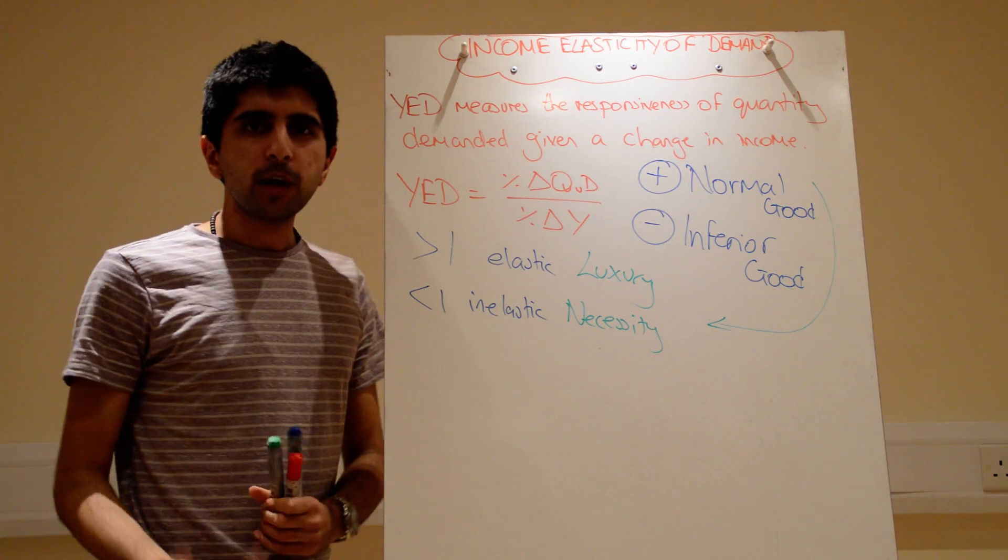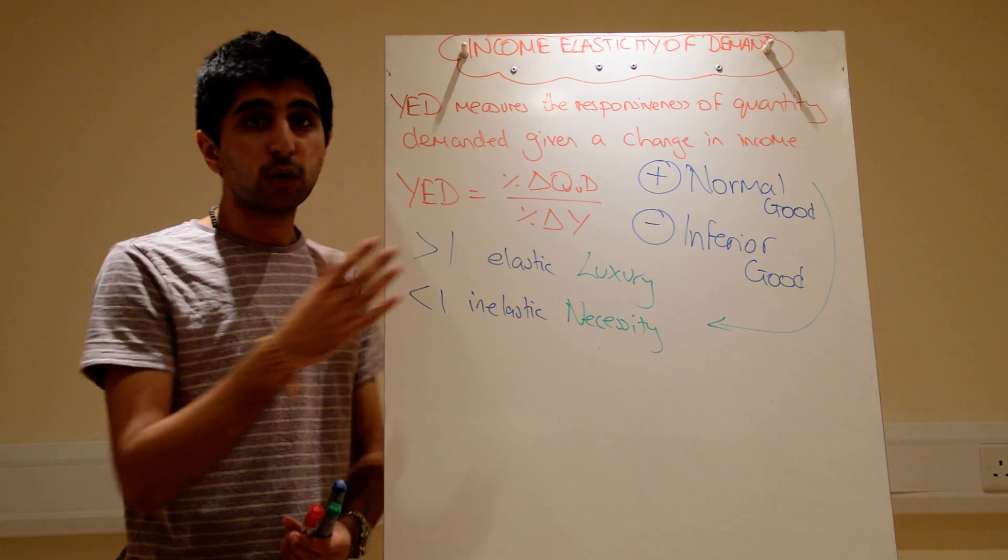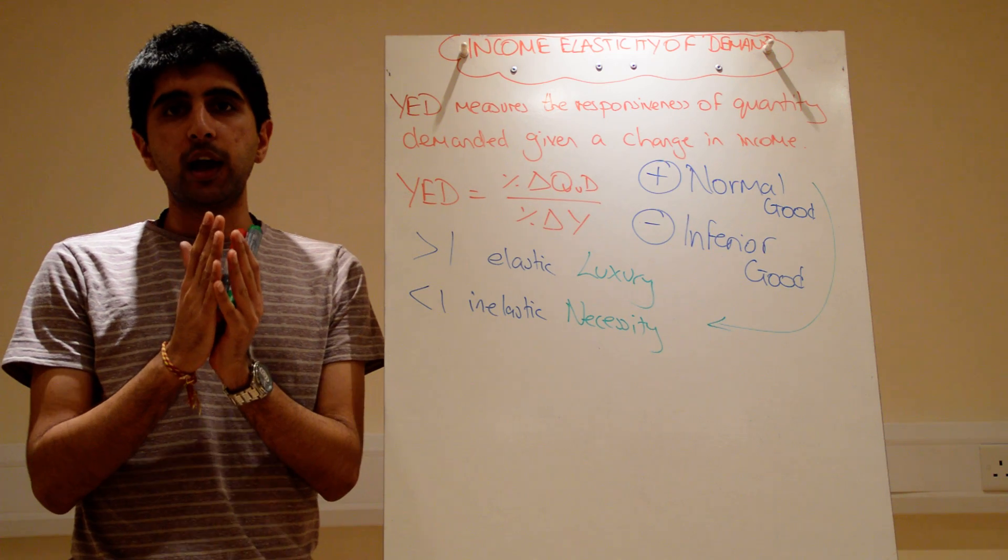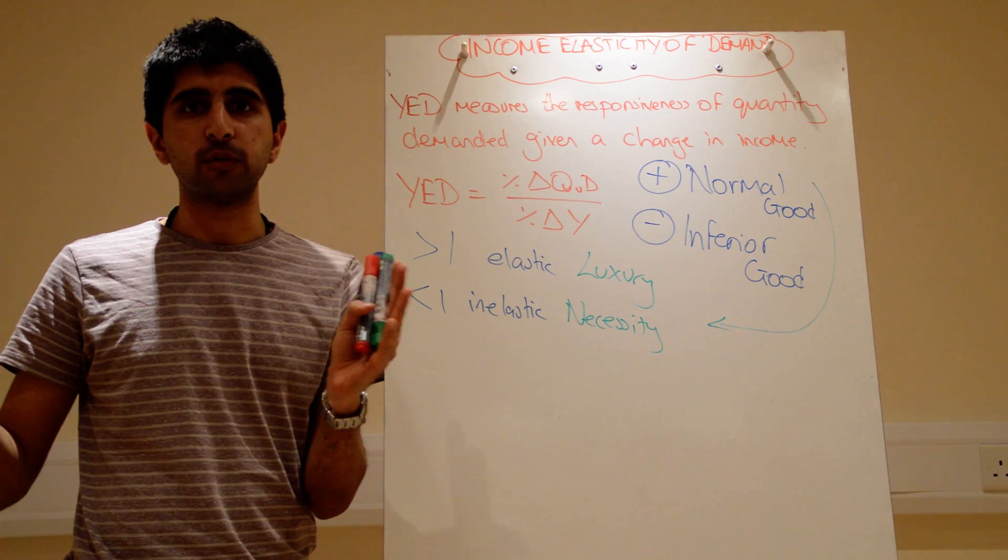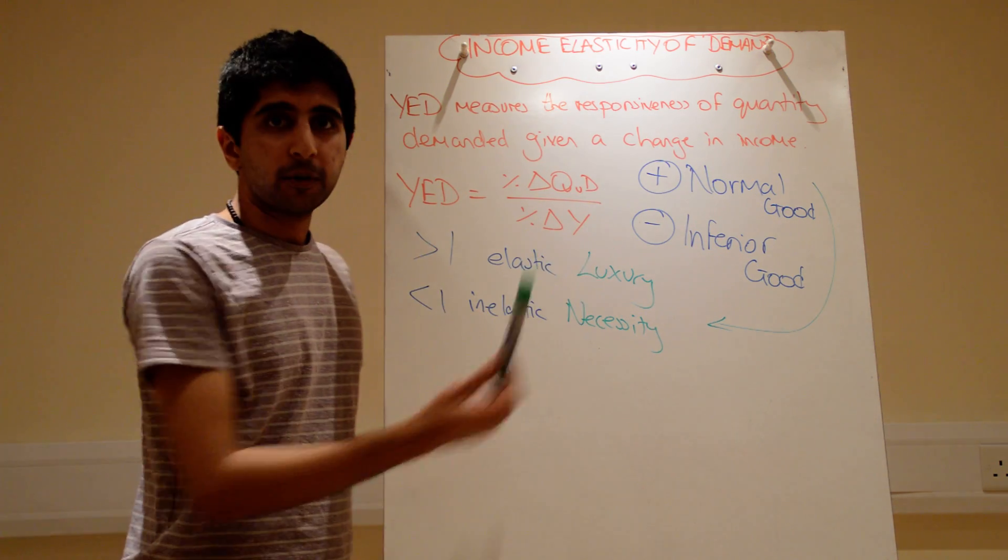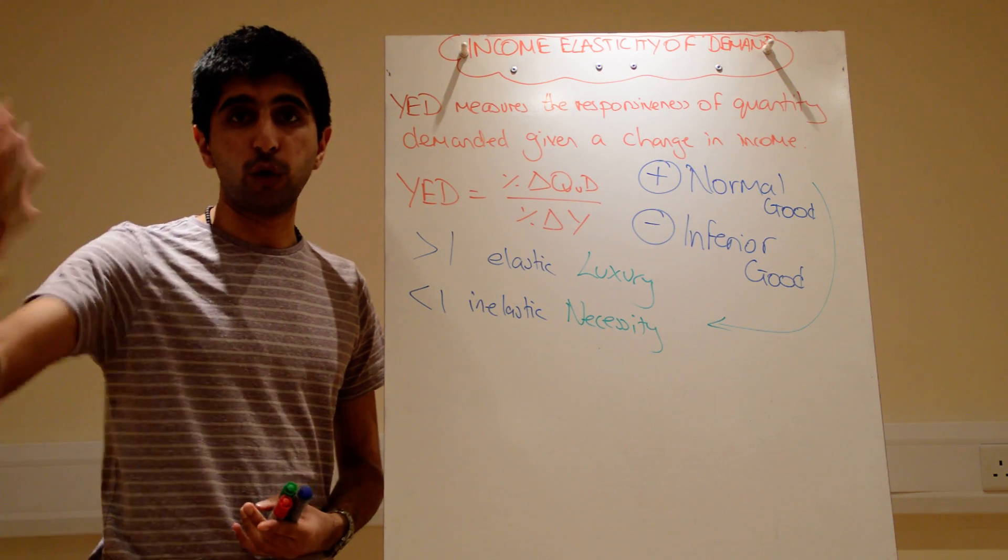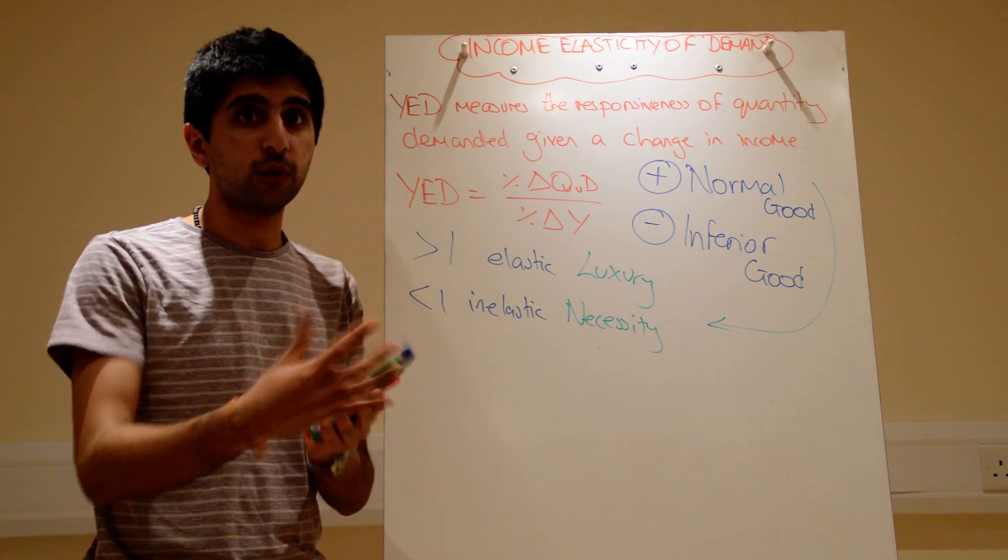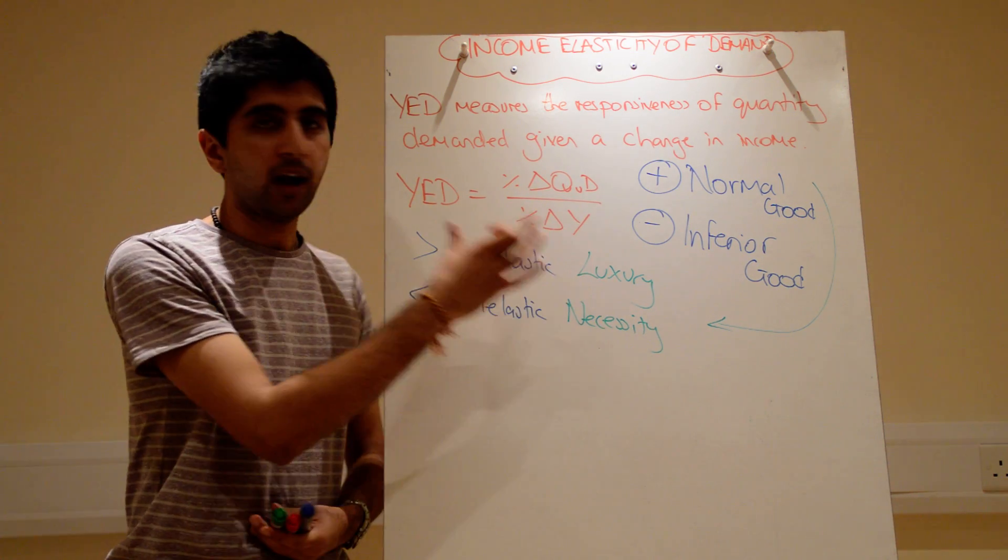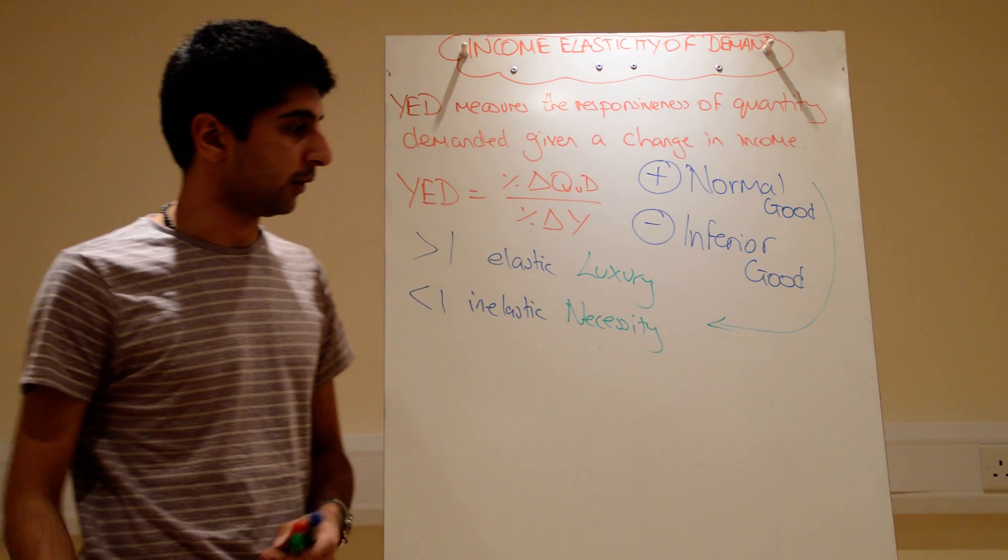So, think about it. Your income goes up massively and the quantity demanded of a good goes up more proportionately. So, your demand for that good is really, really responsive given the change in income. Well, that must be a luxury. Simply because your income has gone up by a lot, you want a lot of it. Your income has gone up, you now want lots of it. It must be a luxury because income has been a massively important factor in the purchase of that good.